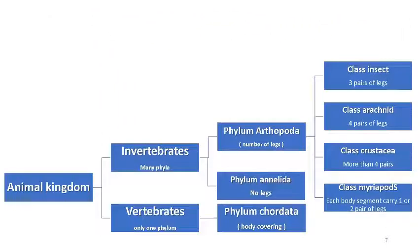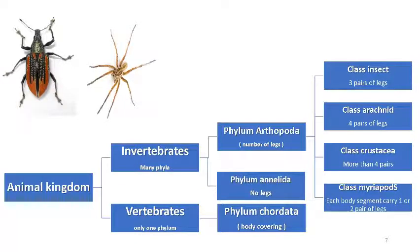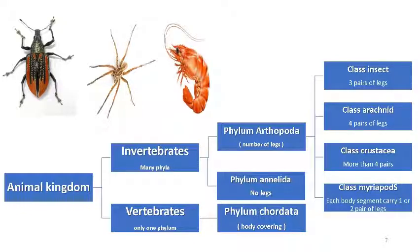Phylum Arthropoda: 'Arthro' means jointed, 'pods' means legs — so Arthropoda literally means animals with jointed legs. Phylum Arthropoda is divided into four classes according to number of legs: Class Insecta with three pairs of jointed legs (six legs), Class Arachnida with four pairs of jointed legs (eight legs), and Class Crustacea with more than four pairs of jointed legs.